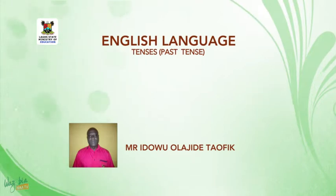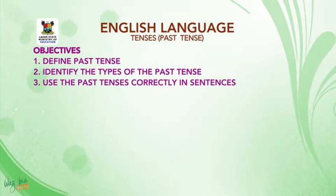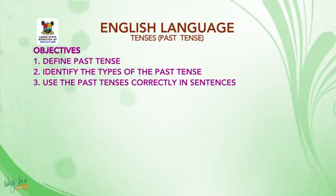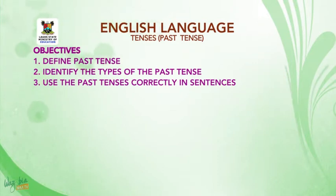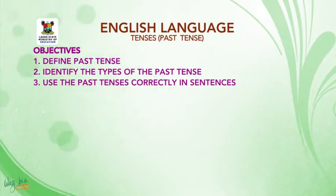Now, our objectives. At the end of the lesson, the student will be able to: 1. Define Past Tense, 2. Identify the Types, 3. Use Past Tenses correctly.